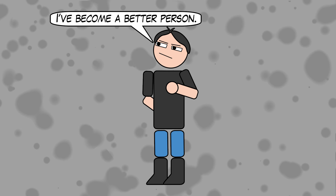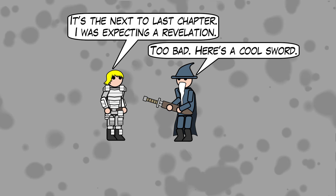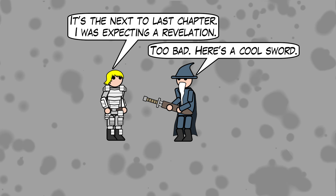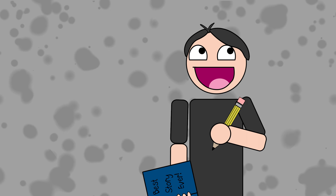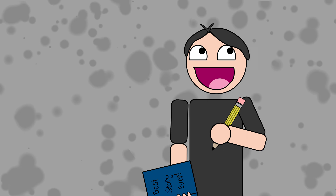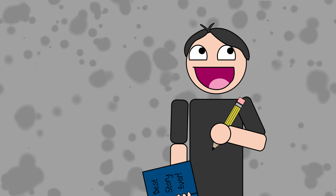Character development is something every writer should learn to fake. Why spend time carefully developing characters when we can just take shortcuts that give the illusion of our characters changing over time? This video can teach any writer to create the appearance of character development. But where to start?